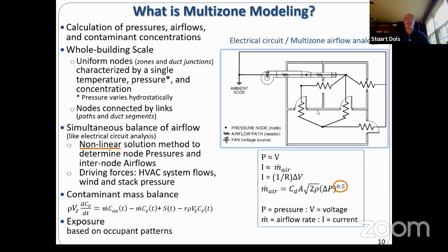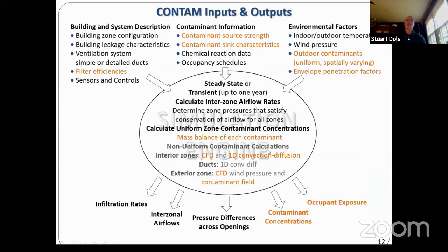Once we have pressures influenced by driving forces from the HVAC system flows, wind, and stack pressures, we can solve for air flows between zones and through ducts, form a contaminant mass balance on a large number of contaminants. Once we have those contaminant concentrations in the zones, we can perform exposure analysis of occupants within the zones, for simulations up to a year long.